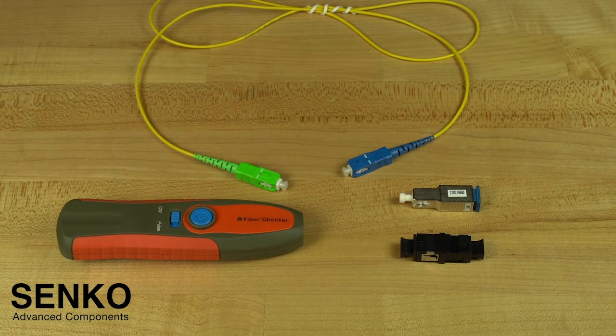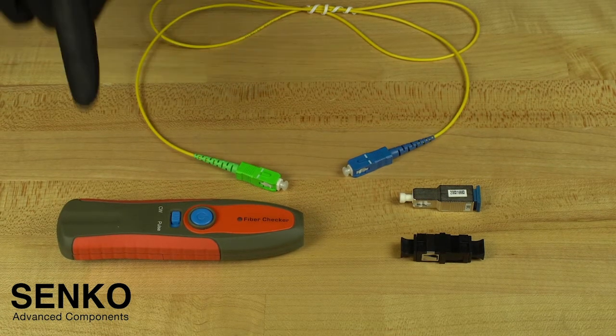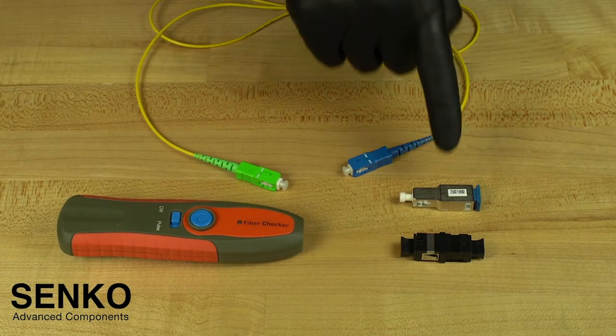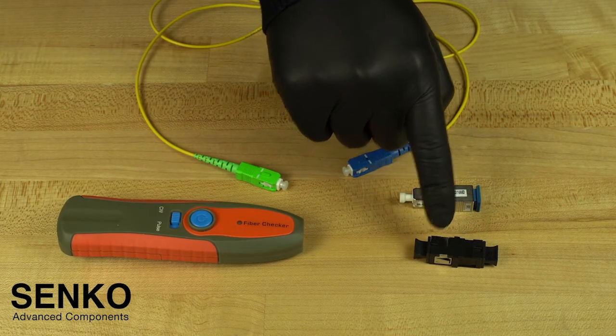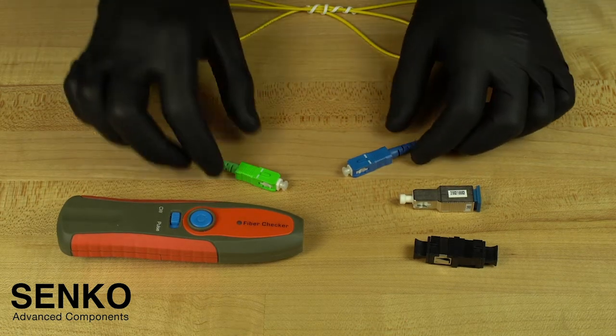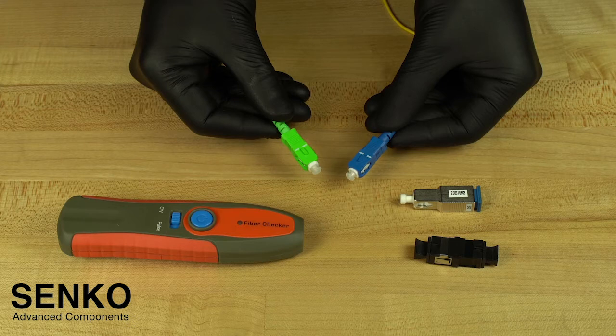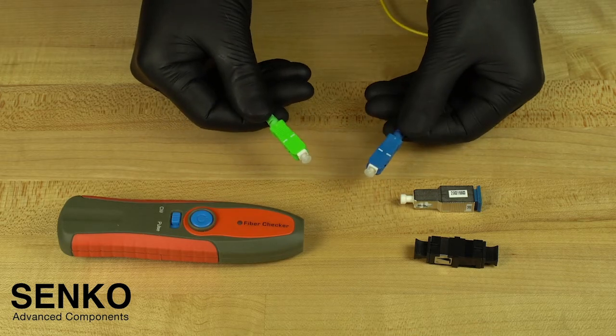You can check the connector for proper termination with an XP-FIT test kit which includes a visual fault locator, also known as a VFL, an SC to SC adapter which has cutouts to show the windows properly, a 3dB attenuator, and a launch cable. In this case, our launch cable is SC-UPC to SC-APC because we have terminated an APC connector. If you have terminated a UPC connector, then you will need an SC-UPC to SC-UPC launch cable.